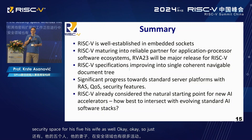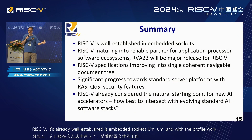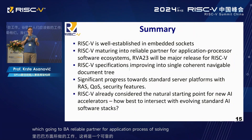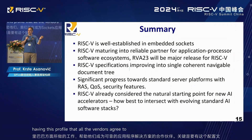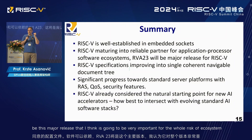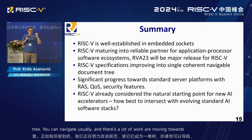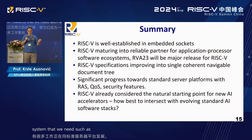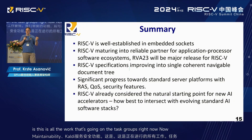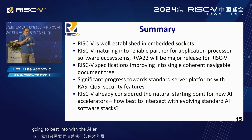To summarize: RISC-V is already well-established in embedded sockets. With the profile work, the platform work, and contributions from Google porting Android and Alibaba helping, we're becoming a reliable partner for application processor sockets. The key is having a profile that all vendors agreed to and software can rely on — and RVA23 is going to be the major release that's very important for the whole RISC-V ecosystem. We're improving the specifications into a single navigable tree, and there's a lot of work moving toward standard server platforms with features like reliability, serviceability, quality of service, and security. For AI, RISC-V is already considered a natural starting point for AI accelerators, and we just have to figure out how best to intersect with AI standard software stacks. Thank you.